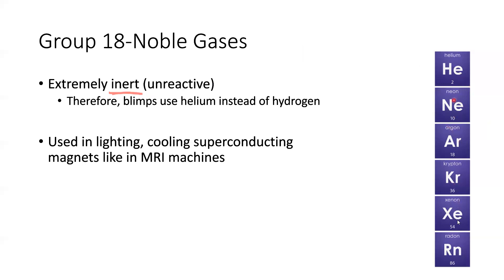Similarly, none of these noble gases are going to be very reactive. In some cases, with very extreme situations of very high pressure or very high temperatures, we can get these to do some things, but for the most part they're going to be completely unreactive. Because of that, and because they're gases, they're good in superconducting magnets. So if you've ever gotten an MRI, they'll be running one of these gases through the machine to keep the magnets cool. And of course you've probably heard of neon lighting. So there are some uses for these, but they're going to be extremely unreactive.